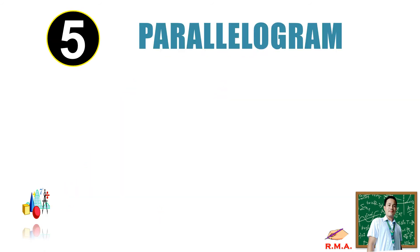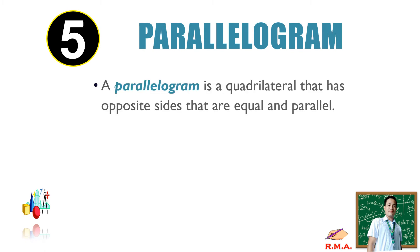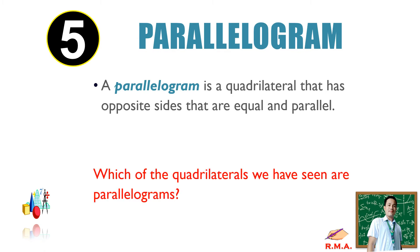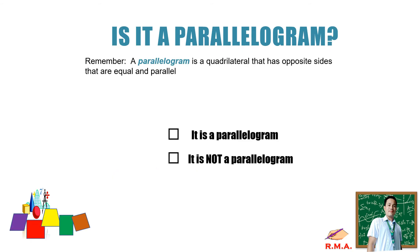Number five is the parallelogram. A parallelogram is a quadrilateral that has opposite sides that are equal and parallel. The question is: which of the quadrilaterals we have seen are parallelograms? Remember, a parallelogram is a quadrilateral that has opposite sides that are equal and parallel.